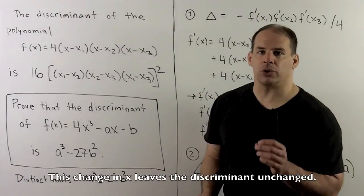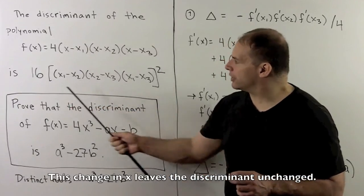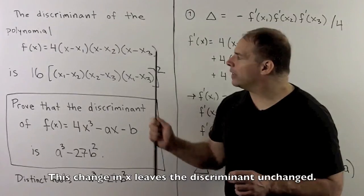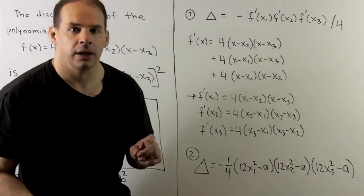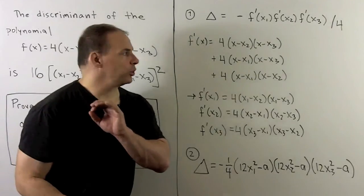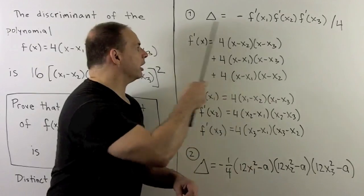Our first step to show the result, I want to relate our factored cubic to the discriminant. One way to do that is by taking derivatives. We take the first derivative of our cubic in factored form, and we apply the product rule, and we get this expression here.